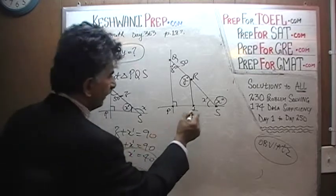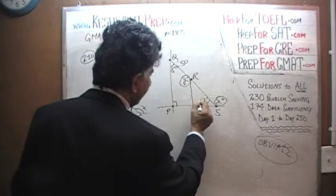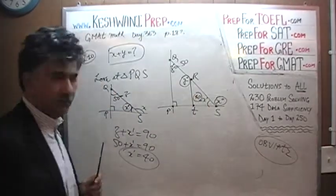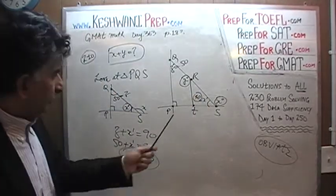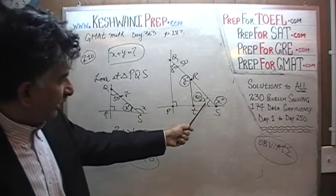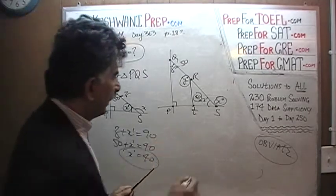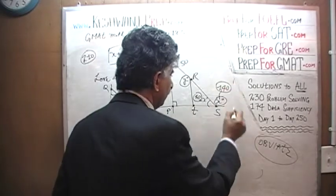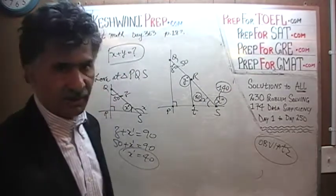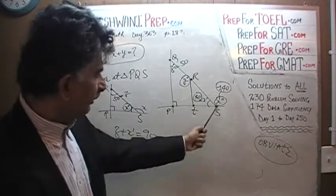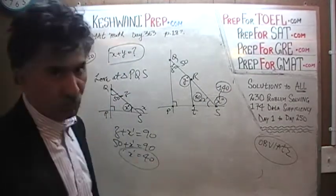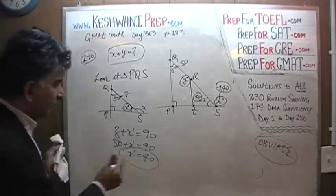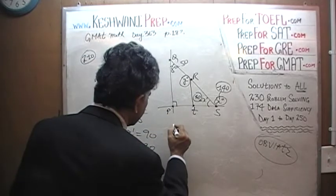This inside angle is 40. If this inside angle is 40, then the outside angle x must be 140, because it's a straight line. We are done with x, now we have to work on y.